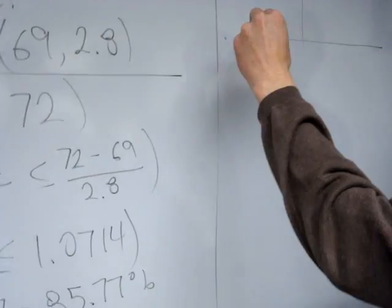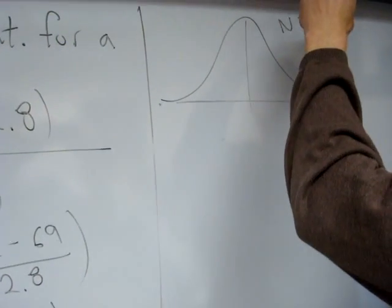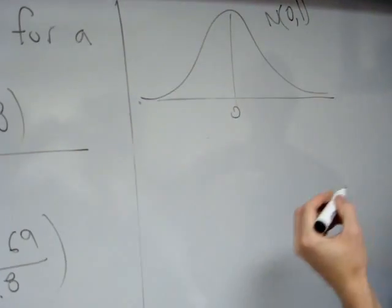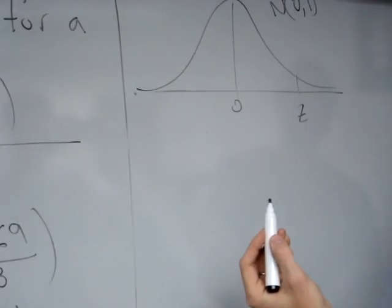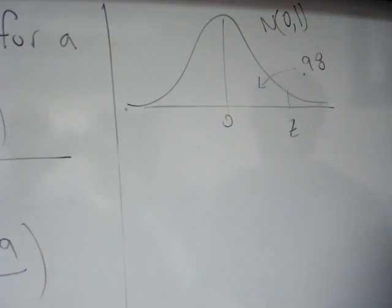So when you're doing percentile problems or cutoff problems, what we would do is start with a normal 0-1. So this is a normal 0-1 curve. This is 0. It's standard deviation of 1. And what we want to do is find this Z cutoff such that 98% of the area is to the left of it.